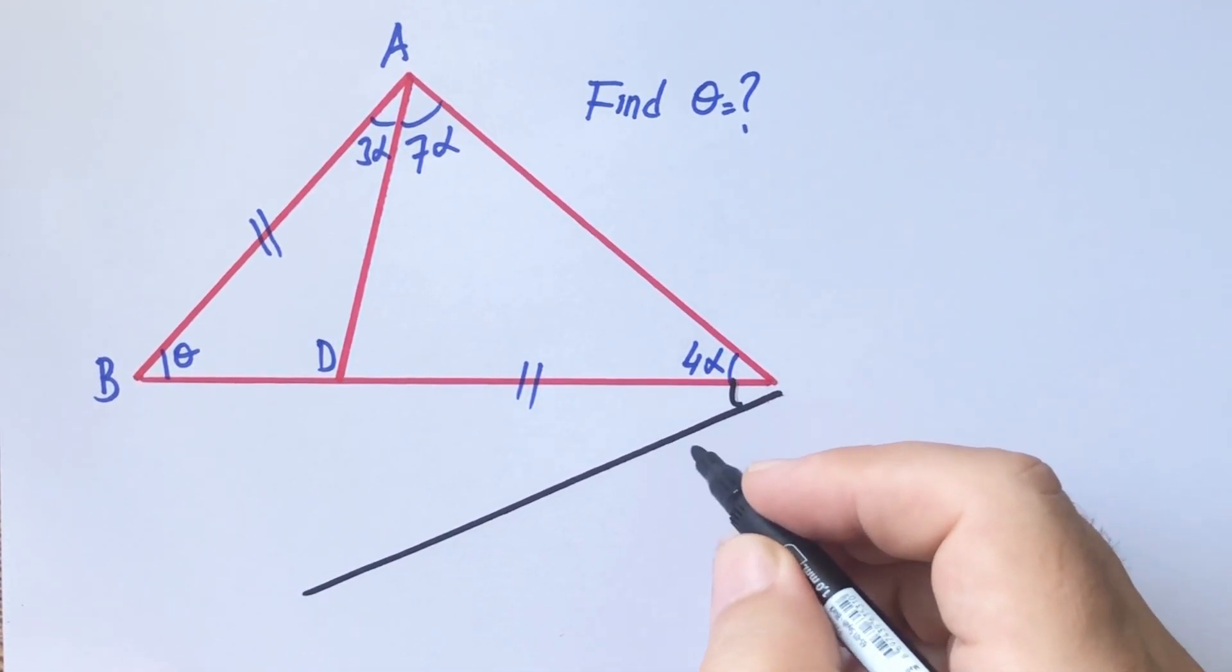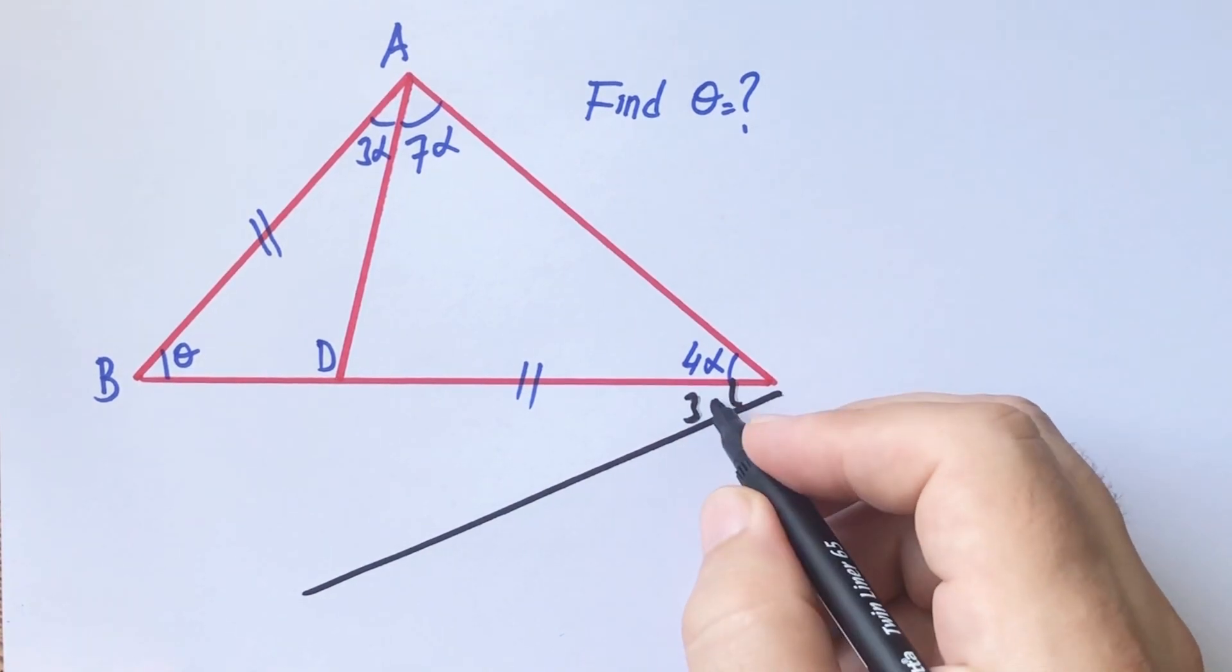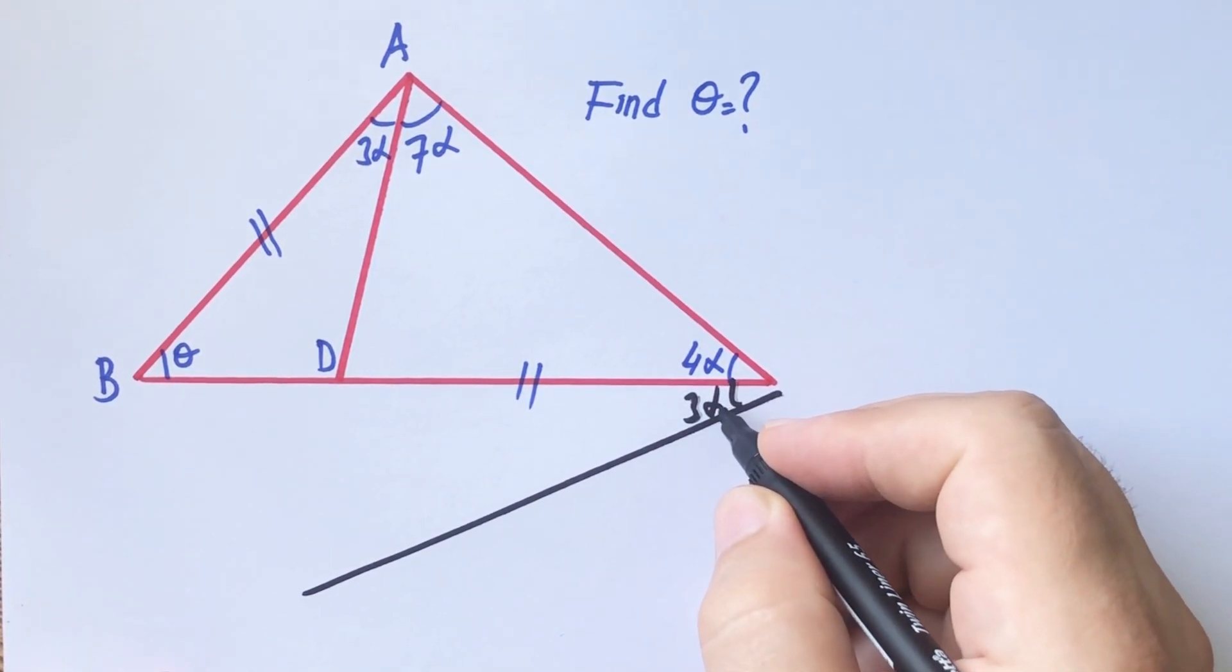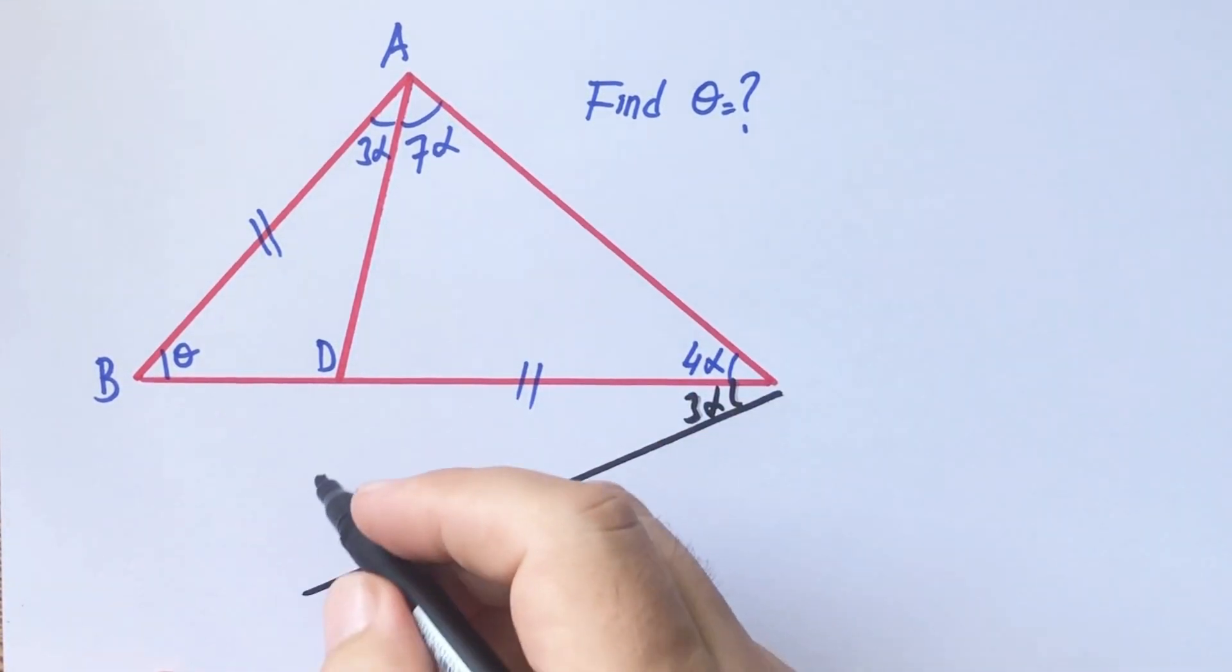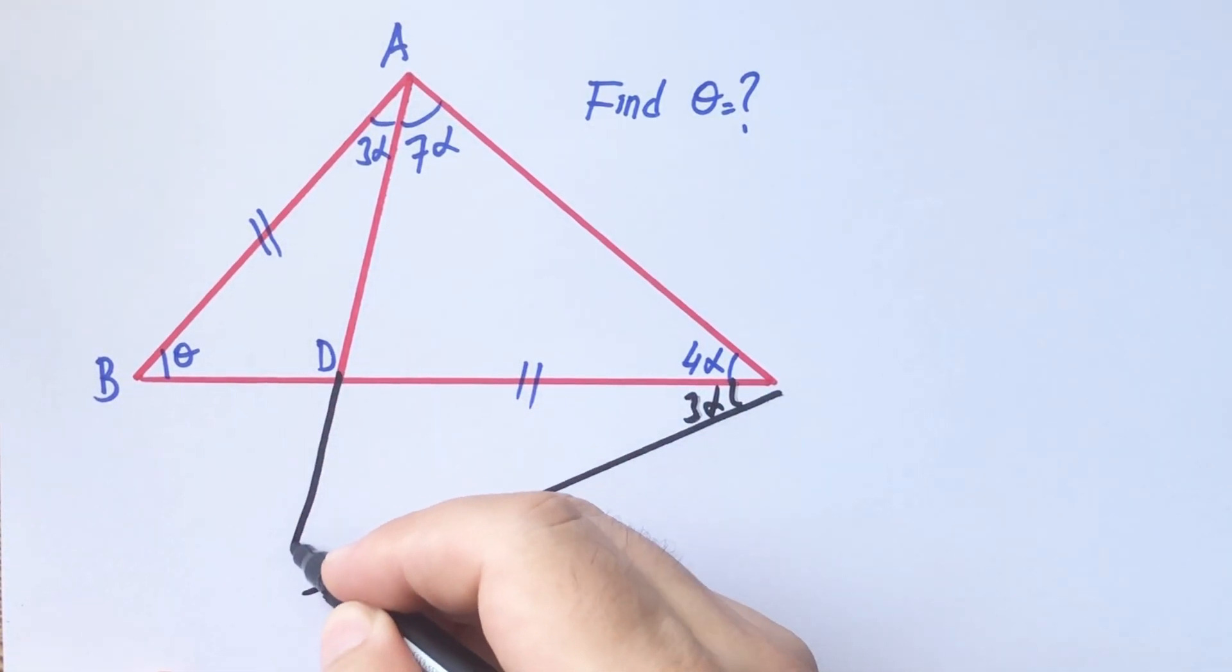So, if we get here three alpha, we have an isosceles triangle, right?